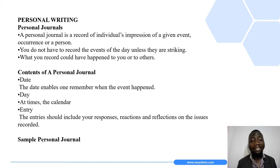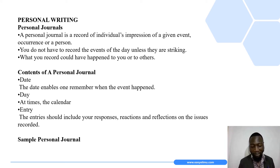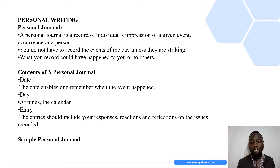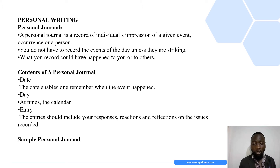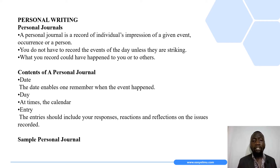A personal journal is a record of an individual's impression of a given event, occurrence, or a person. These are notes about the striking events or thoughts of a person. When writing personal journals, you do not have to write all the events that took place throughout the day — you only go for those that are striking. What you record could have happened to you or to other people.